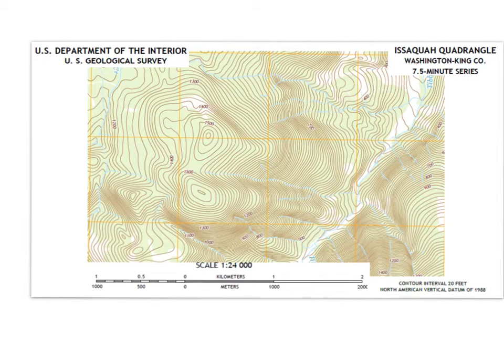So that means when lines are closer together, you're on a steeper slope, like over here. And when lines start to get a little further apart, it's flattening out a bit.